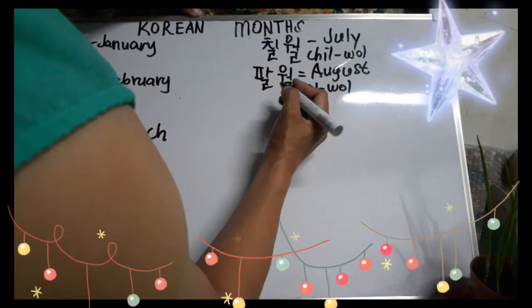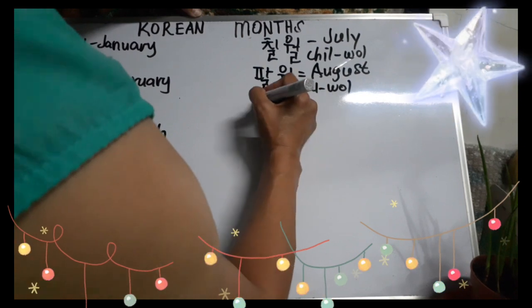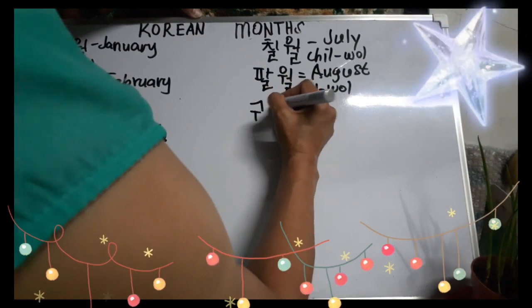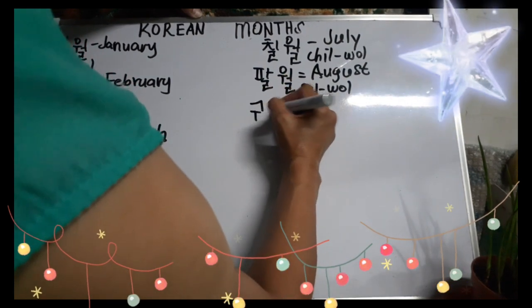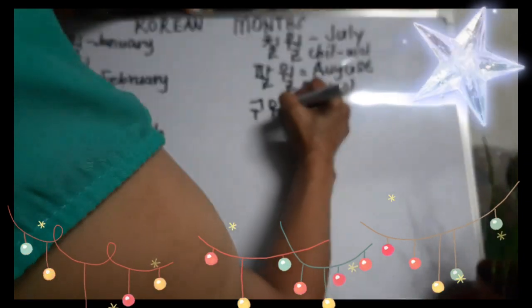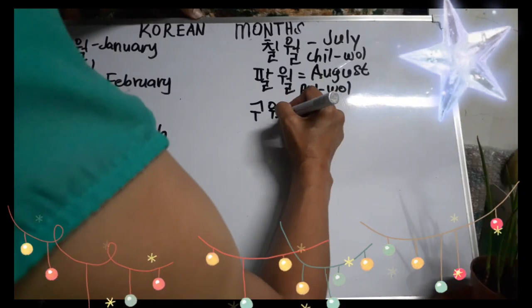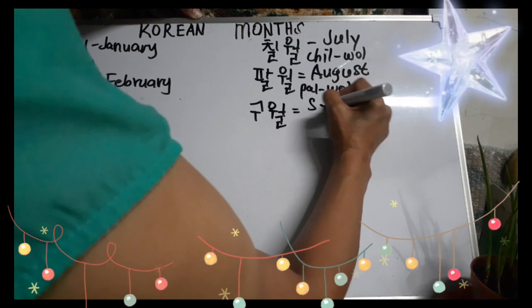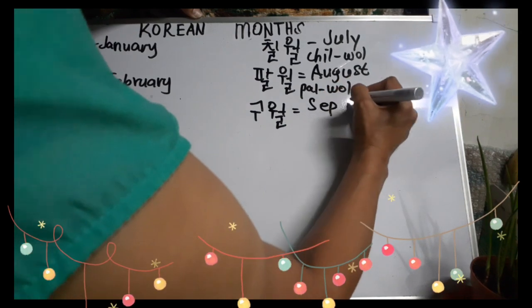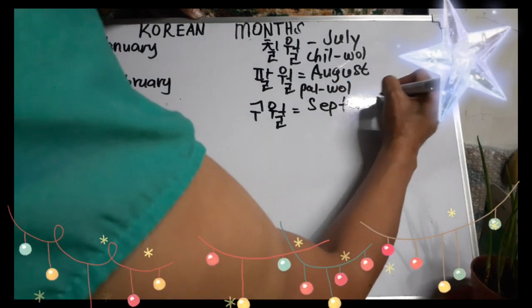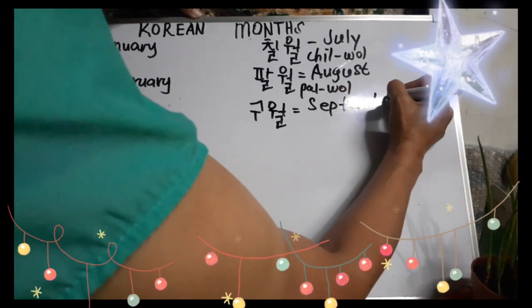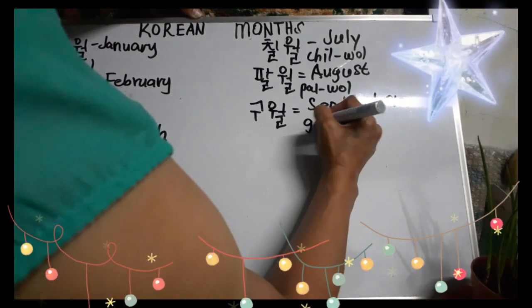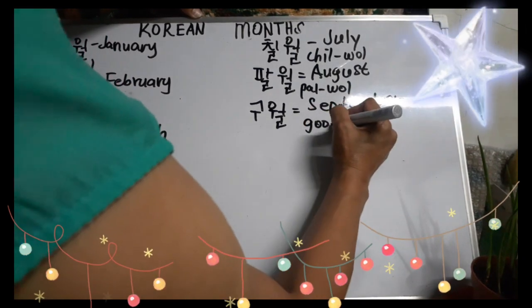September — Co Wall. Okay. Co Wall. Okay. This is September. September. Okay. Co Wall.